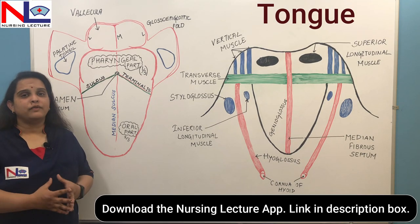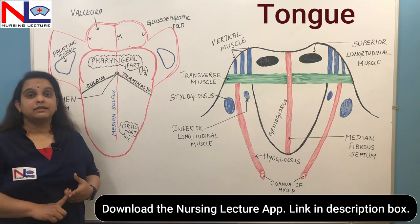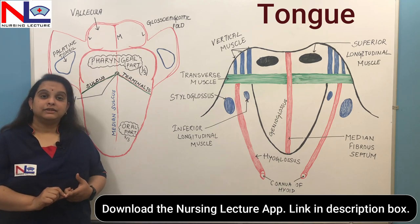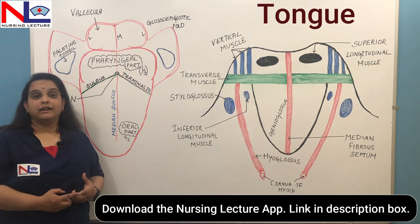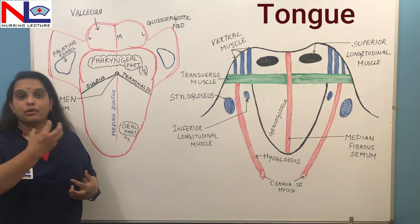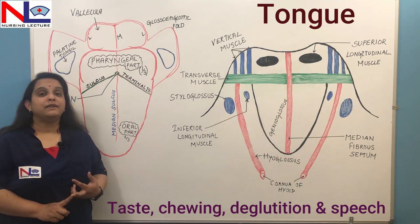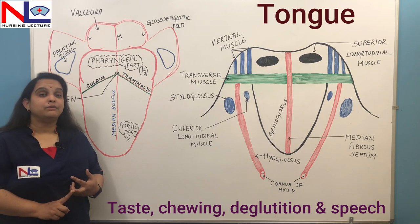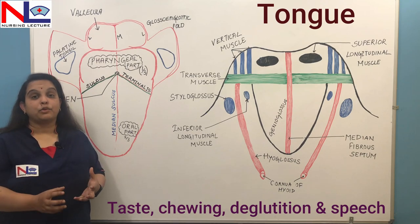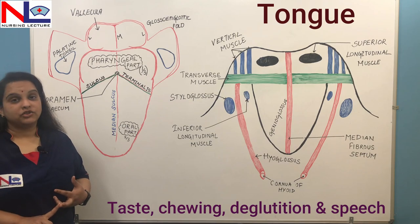The tongue is responsible for various activities in our body. It senses taste because it has many projections over the upper surface of the tongue that sense various tastes. It also assists in chewing because it propels the food in between the teeth, which help in further digestion. Once food mixes with the various salivary juices in our mouth, it makes the bolus and propels the food, helping in swallowing or deglutition of food along the GI tract.